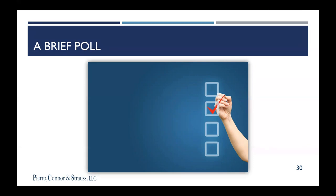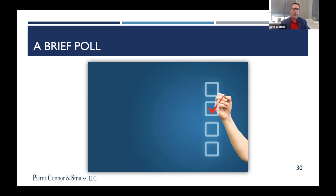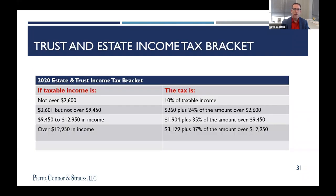A revocable trust is really a contingency plan. There are basically two contingencies designed into the trust with significant protective provisions. What if you become incapacitated? This comes up frequently and gets litigated. In our document, we have a series of provisions to determine incapacity — your treating physician can certify you incapacitated, or a committee of physicians, or a court can determine incapacity. We also address disappearance — if you are missing for a certain period of time, this can trigger your successor trustee to step in and manage assets for your benefit.